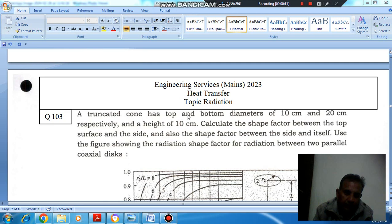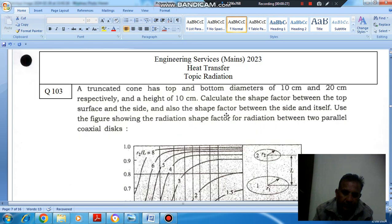A truncated cone has top and bottom diameters of 10 cm and 20 cm respectively, and a height of 10 cm. Calculate the shape factor between the top surface and the side, and also the shape factor between the side and itself. Use the figure showing the radiation shape factor for radiation between two parallel coaxial discs.